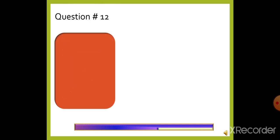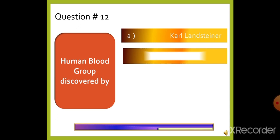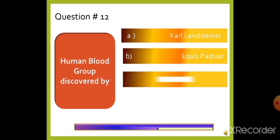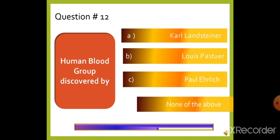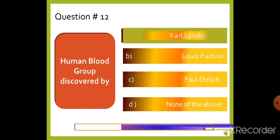Question 12: Human blood groups were discovered by — option A: Karl Landsteiner, option B: Lewis Pasteur, option C: Paul and Rich, or option D: None of the above. The right answer is option A, Karl Landsteiner.